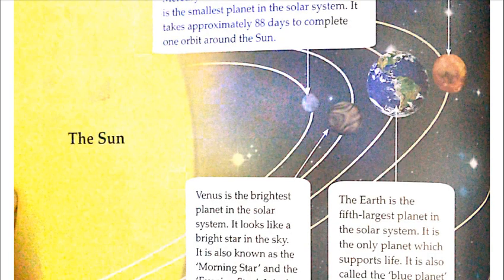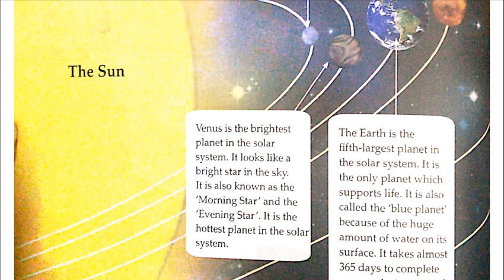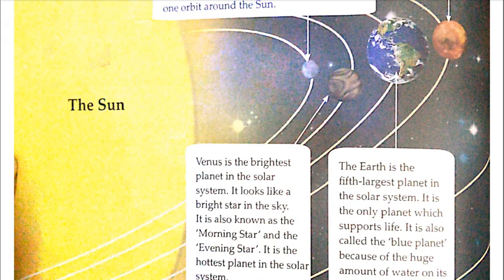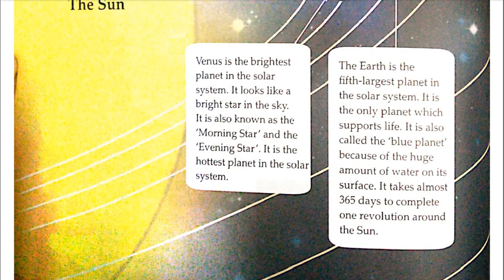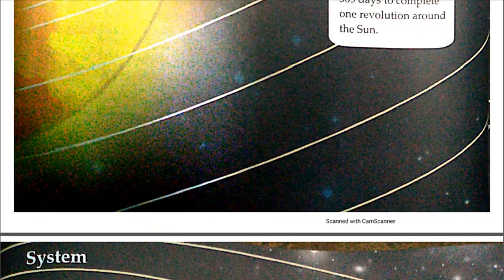Earth is the fifth largest planet in the solar system and it is the only planet which supports life. It is also called the blue planet because of the huge amount of water on its surface. It takes almost 365 days to complete one revolution around the sun.